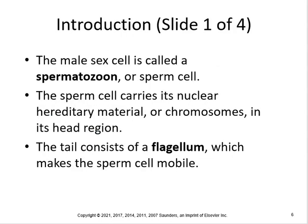The male sex cell is called the spermatozoan, or sperm cell. The sperm cell carries its nuclear hereditary material, or chromosomes, in its head region. You get 23 chromosomes from mom and 23 from dad — humans have a total of 46 chromosomes. The tail consists of a flagellum, which makes the sperm cell mobile.